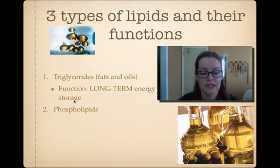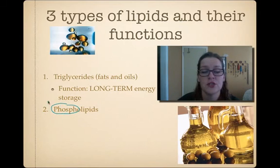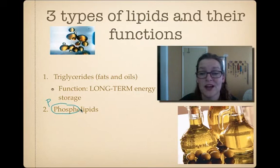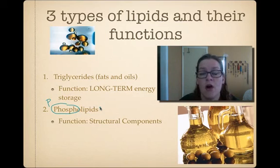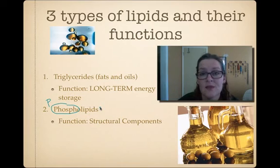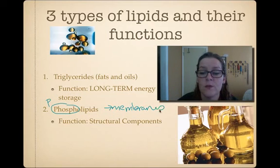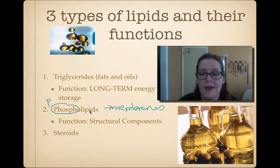The second group are called phospholipids, and that's where we see another one of our CHOMPS elements introduced. 'Phospho' refers to phosphorus - we've been talking mostly about carbon, hydrogen, and oxygen, so now we've got another element. Phospholipids are structural components of all living things. Every cell has a membrane, and some cells have membranes inside of membranes, but they're all made up of phospholipids.